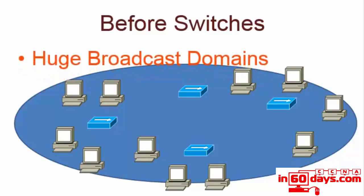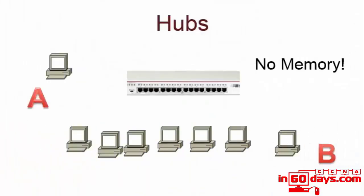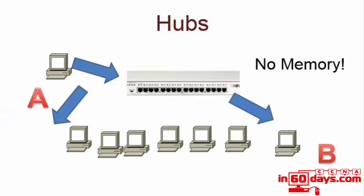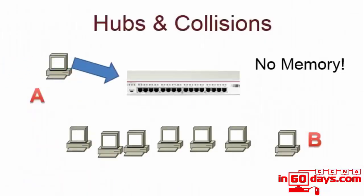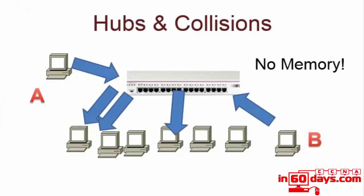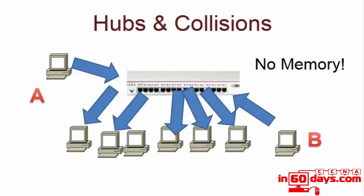Every connected device would receive the same copy of the frame, and this would go on and on because hubs have no intelligence and no memory to store connected devices. To illustrate: if host A wants to send a frame to host B, the hub doesn't know where host B is, so it sends the same copy out of every single connected interface. When B replies, the same thing happens — every single connected device receives a copy of the frame.